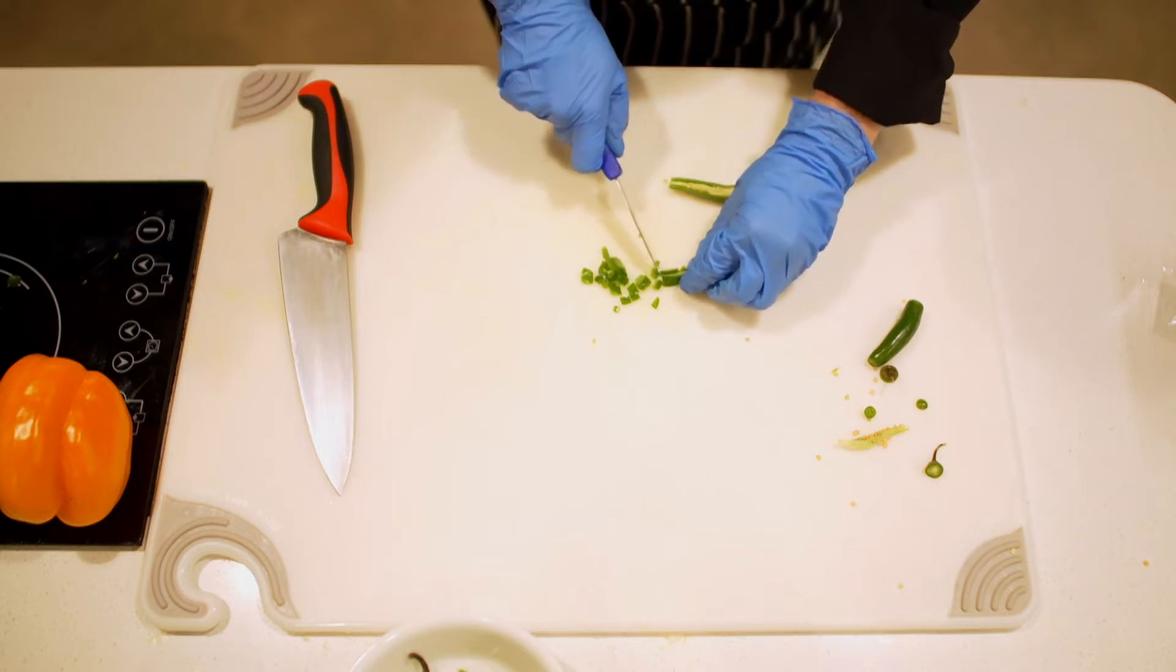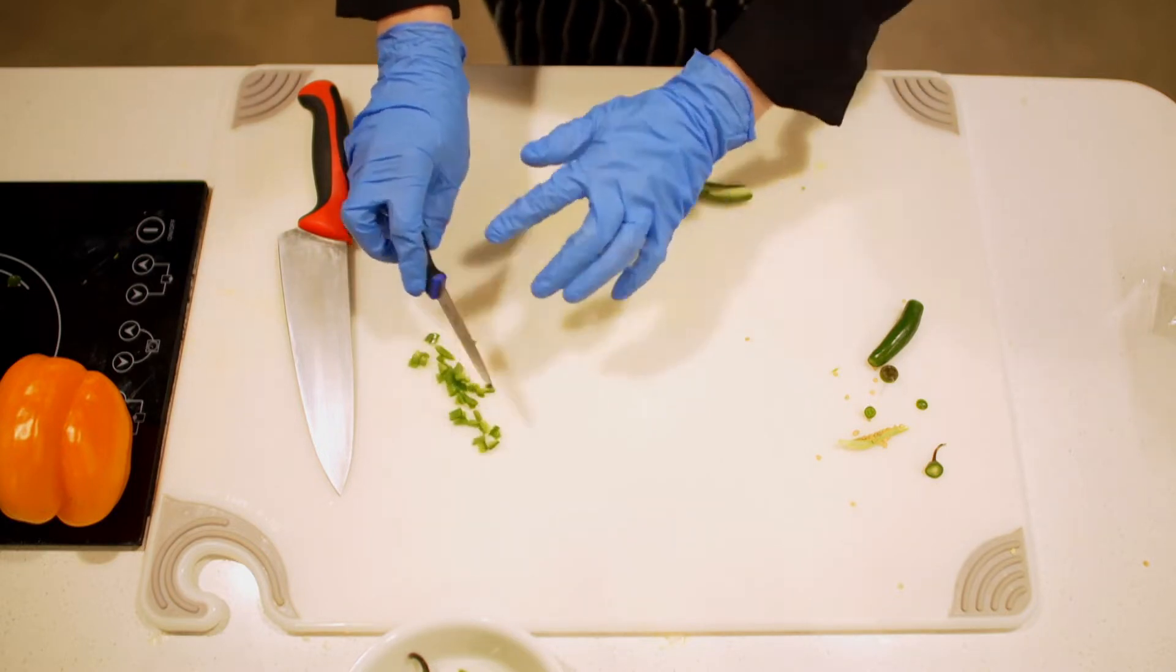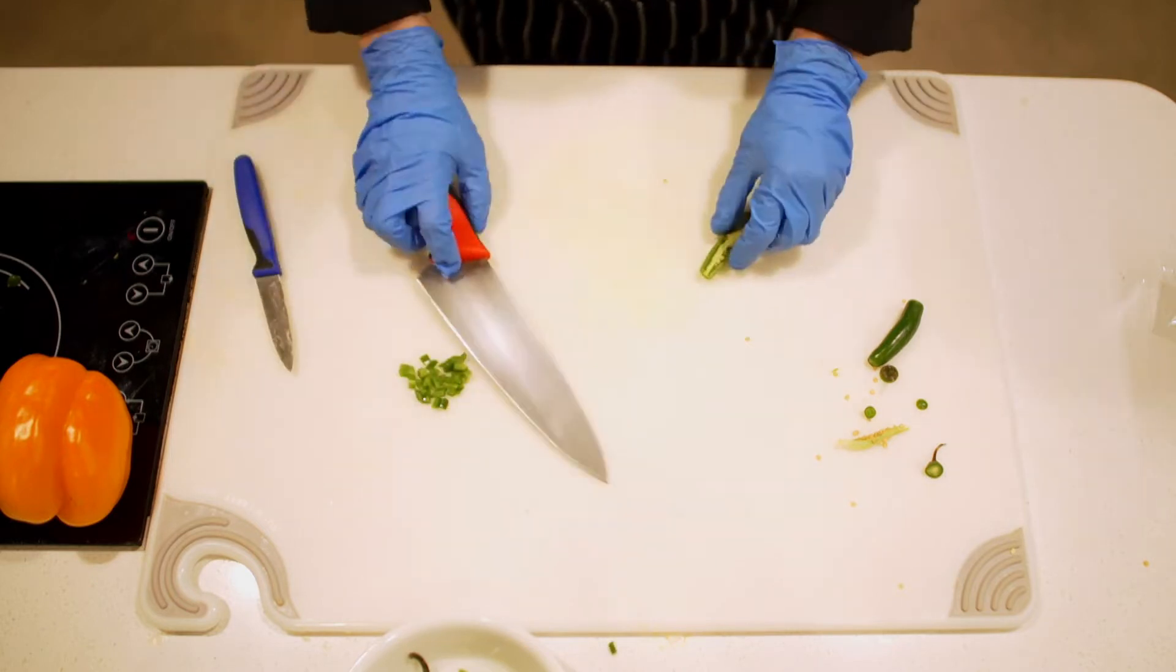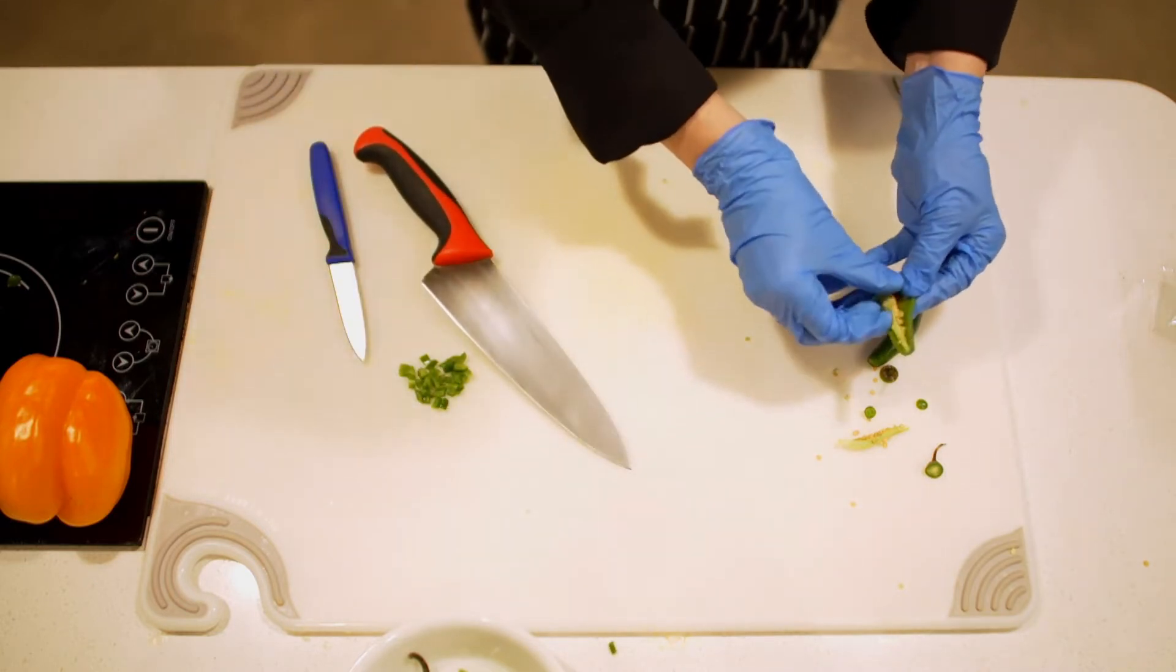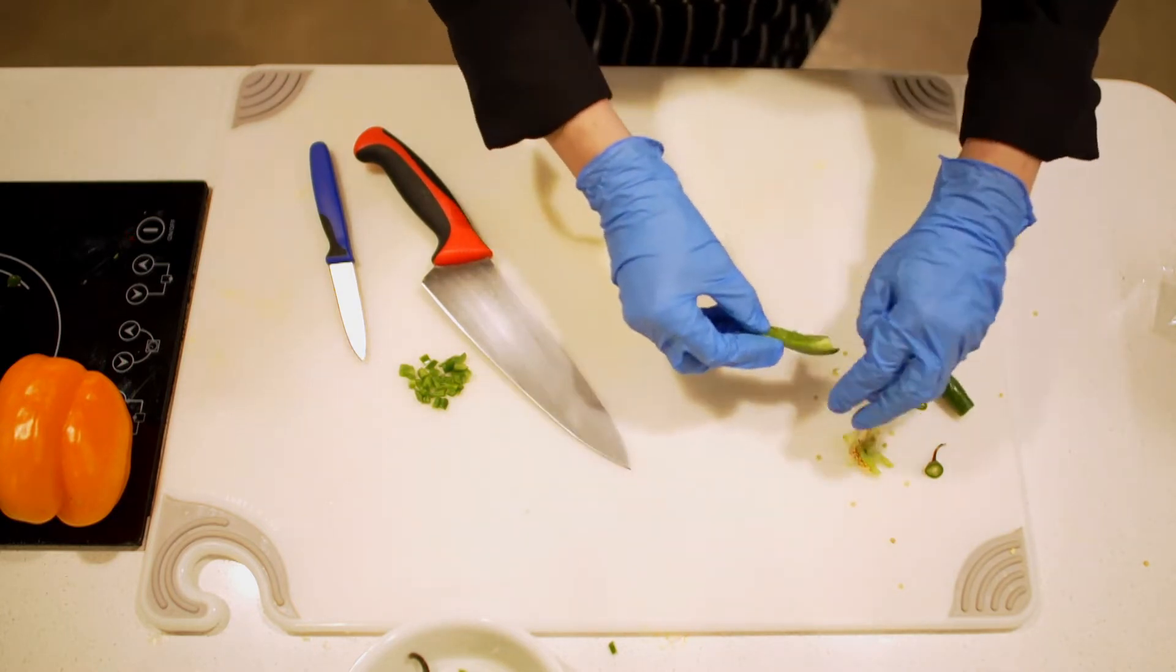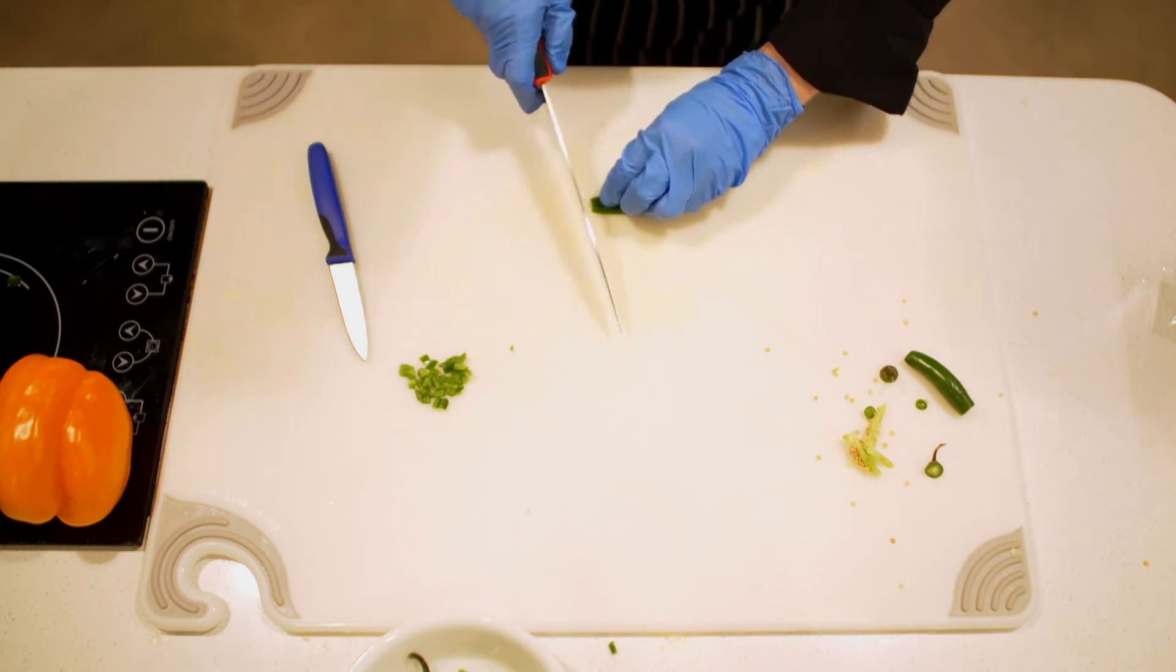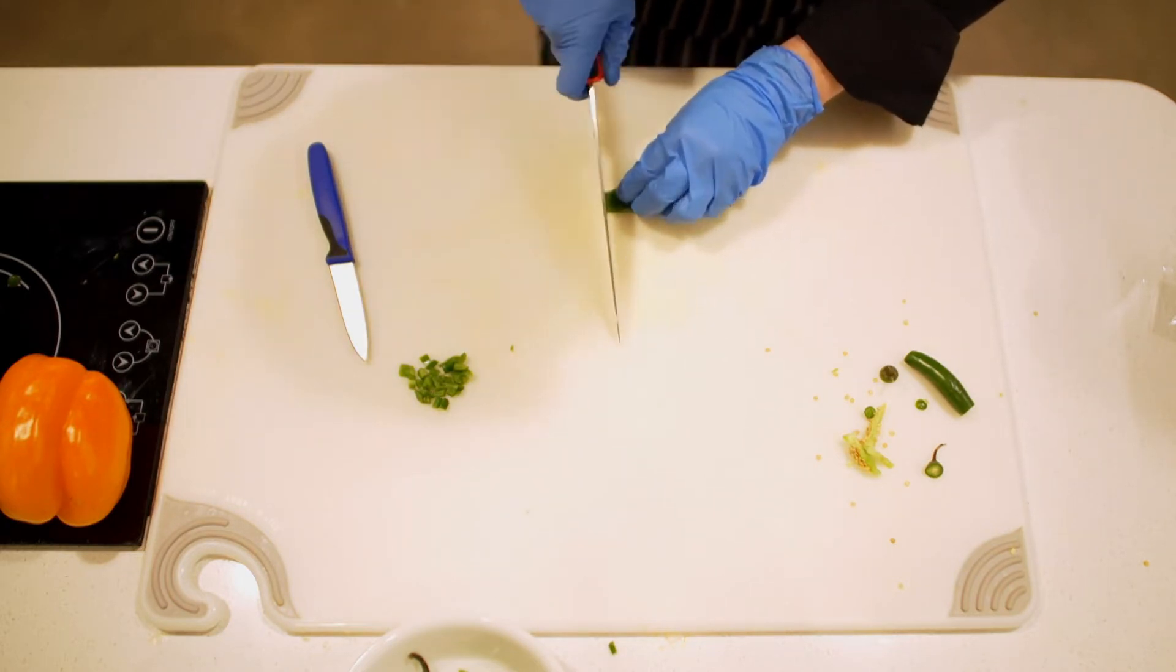Another thing that you could do if you don't want just little dice: after you remove the rib and the seeds, just lay the chili out and make really tiny thin slices.